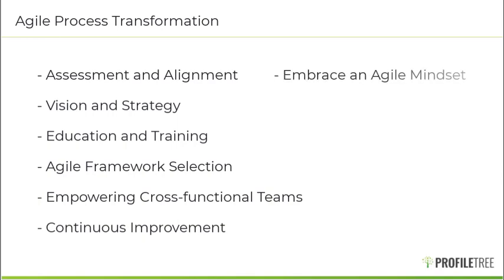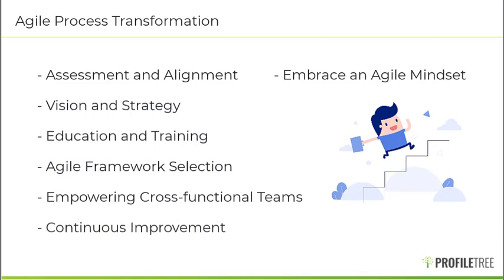Before we finish, I want to encourage you to embrace an agile mindset. Agile transformations require a shift in mindset at all levels of your organization, embracing values such as adaptability, collaboration, involvement and continuous learning — this is a way to really excel in this specific area. It also means promoting a culture of experimentation and accepting failure as an opportunity for learning, and encouraging your employees to take ownership and accountability. New technology can be a daunting challenge, and the best way for your company to get the most out of it is allowing people to fail fast, learn fast and really adopt this type of mindset.